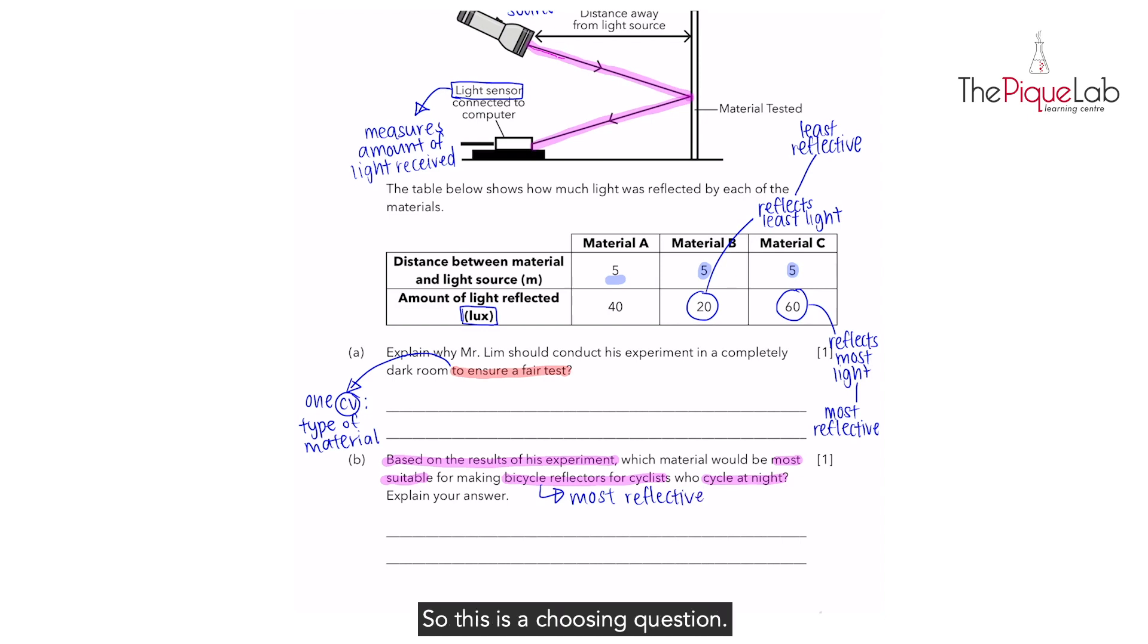So this is a choosing question. For choosing questions, how do we phrase our answer? We use the CUE template. The first one, C, choose. If I want to choose the most reflective material, I would choose material C. That is my choose. And after that, use the data. Why do we choose material C? It's because material C reflected the most amount of light when the materials were all placed five meters away from the light source. That is using the data that's given to you.